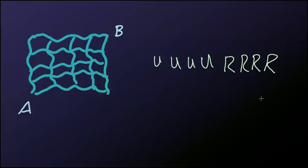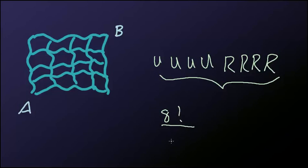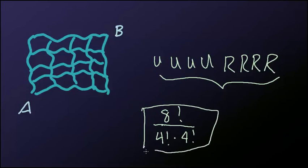The question is how many different configurations are there to go from A to B? In other words, how many ways are there to rearrange U, U, U, U, R, R, R, R? This is a lot like permutations. We have 8 factorial ways of placing the letters. Since we have four U's, we divide by 4 factorial. Since we have four R's, we also divide by 4 factorial. So there are a total of 8 factorial divided by 4 factorial divided by 4 factorial ways to go from A to B.